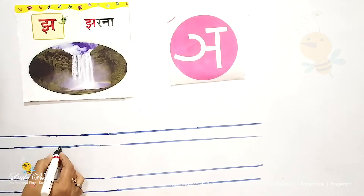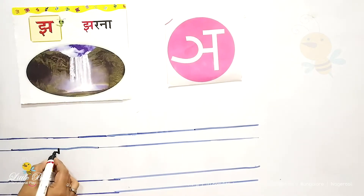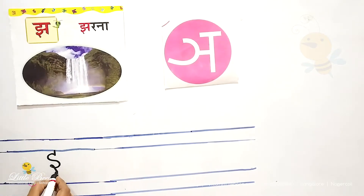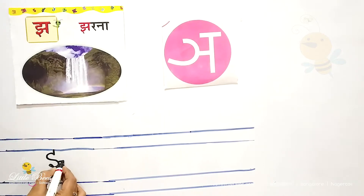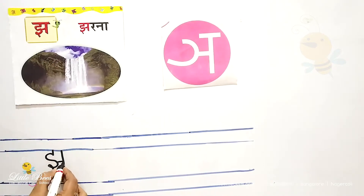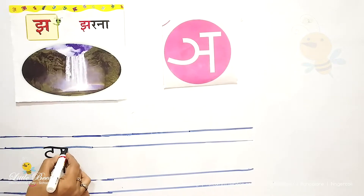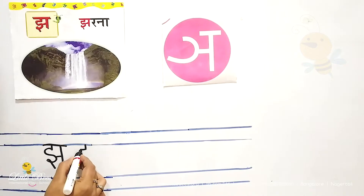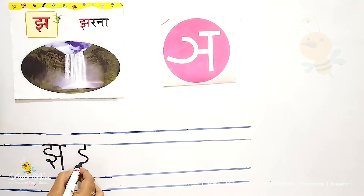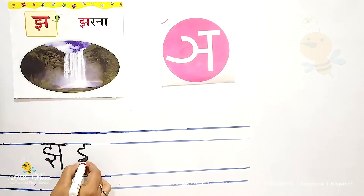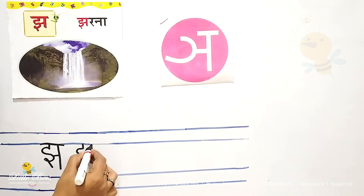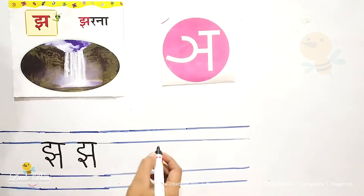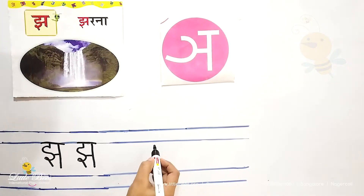You have to write Jharnam: small standing line, small sleeping line and a standing line. This is Jharnam, small standing line. Jharnam — Jha means waterfall.